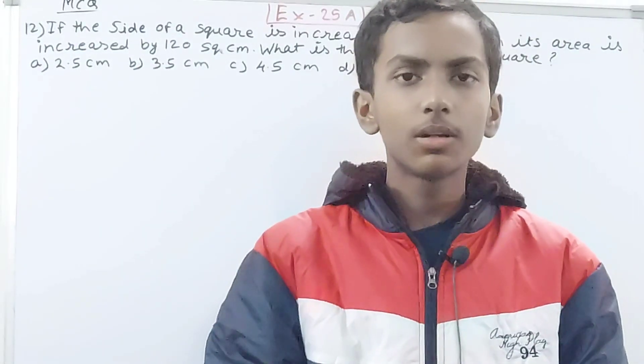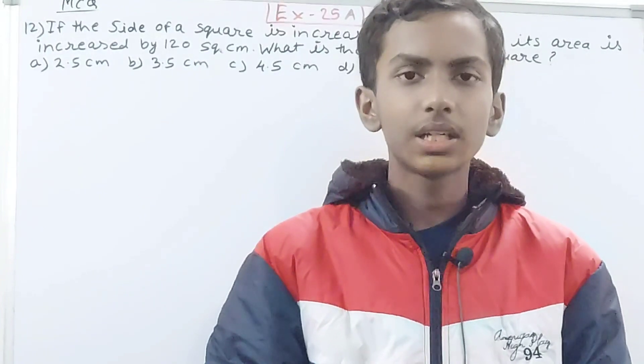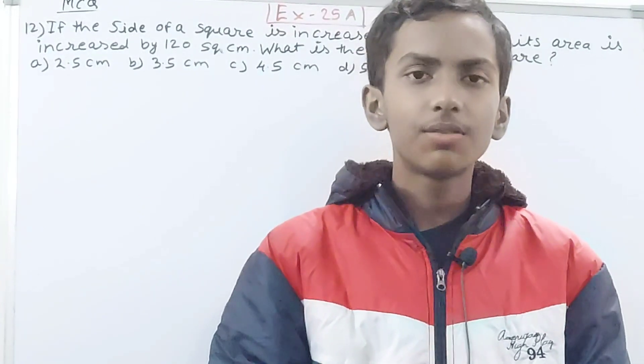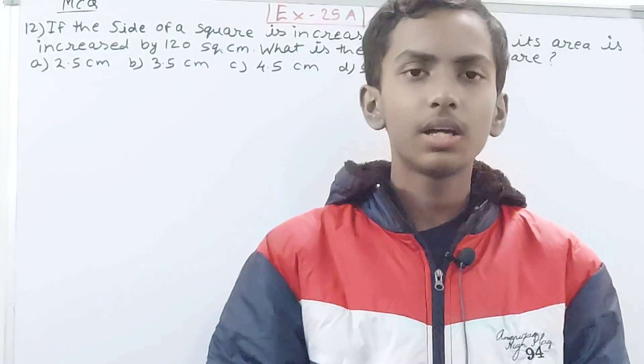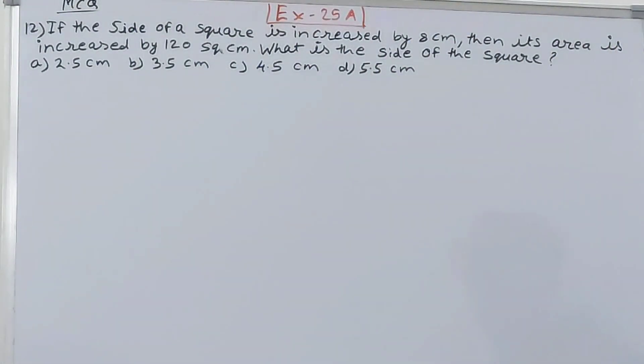Hello friends, welcome back to my YouTube channel Local Learning. In this video we are going to solve ICSE Mathematics Class 8 Chapter 25 Area of Rectilinear Figures Exercise 25A Question Number 12. If the side of a square is increased by 8 centimeters, then its area is increased by 120 square centimeters. What is the side of the square?